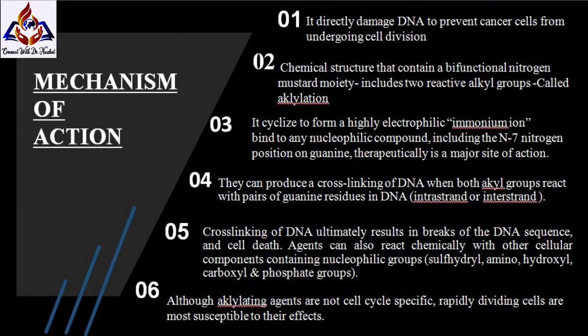Mechanism of action: alkylating agents directly damage DNA to prevent cancer cells from undergoing cell division. They have a chemical structure that contains a bifunctional nitrogen mustard moiety which includes two reactive alkyl groups, hence the term alkylation. These groups can cyclize in an aqueous environment to form a highly electrophilic ammonium ion that can covalently bind to any nucleophilic compound, including the N7 nitrogen position on guanine.